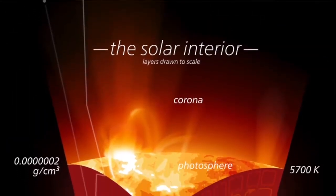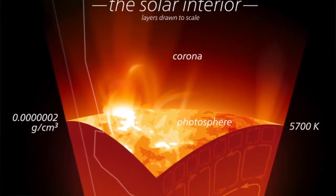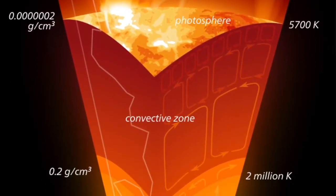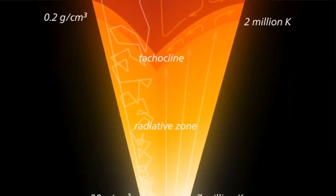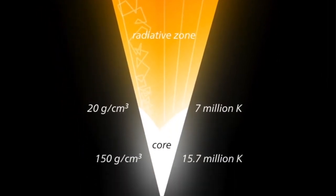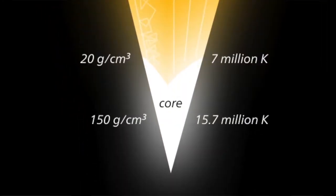The Sun has many different layers, so we're going to start from the inside and work our way out. The innermost layer of the Sun is called the core. At 15 million degrees, the core is by far the hottest internal layer. It's also the most dense, meaning it has the most particles packed together of any internal layer.